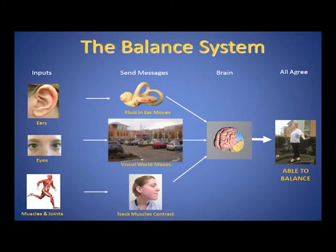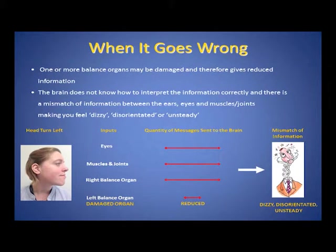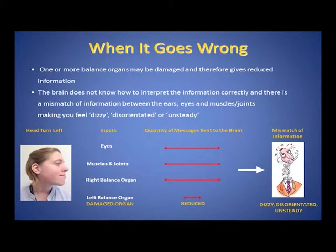If all three of these inputs — the ears, eyes and muscles and joints — agree that you have moved your head by the same amount, then you feel fine and are able to balance well. If one or both balance organs are damaged, then the information received is reduced from the ears. The brain doesn't know how to interpret the information correctly and there is a mismatch of information, which leaves you feeling dizzy, disorientated or unsteady.